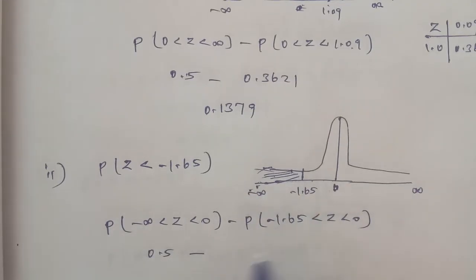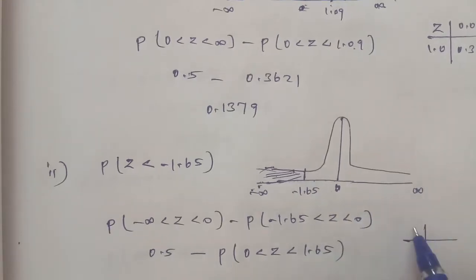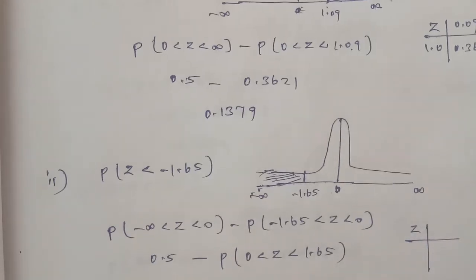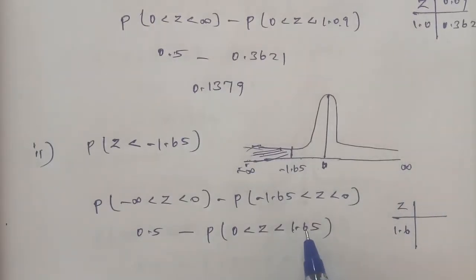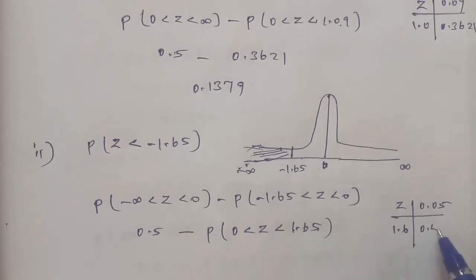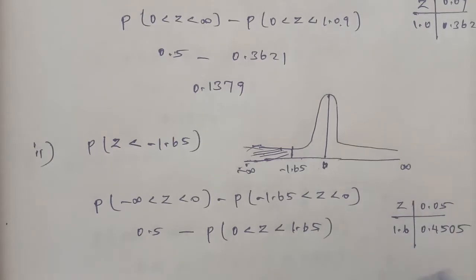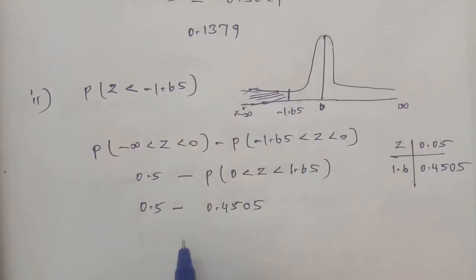From the standard normal table, looking up Z = 1.6 in the row and 0.05 in the column gives the value 0.4505. Therefore the answer is 0.5 minus 0.4505 equals 0.0495. This is the answer for subdivision 2.